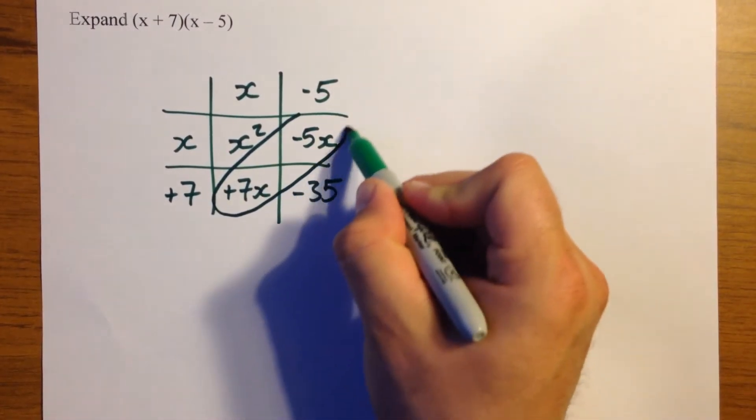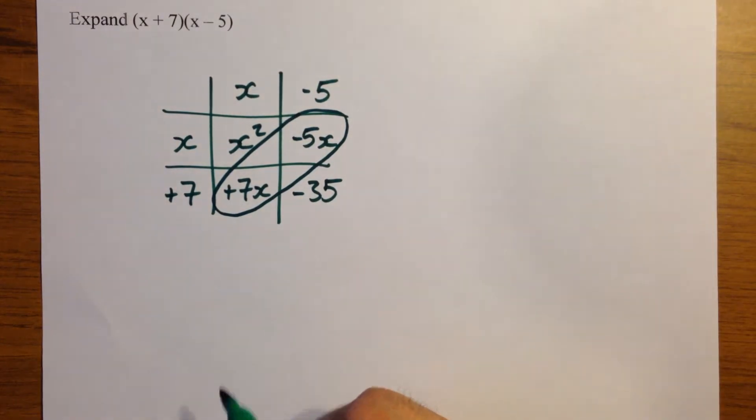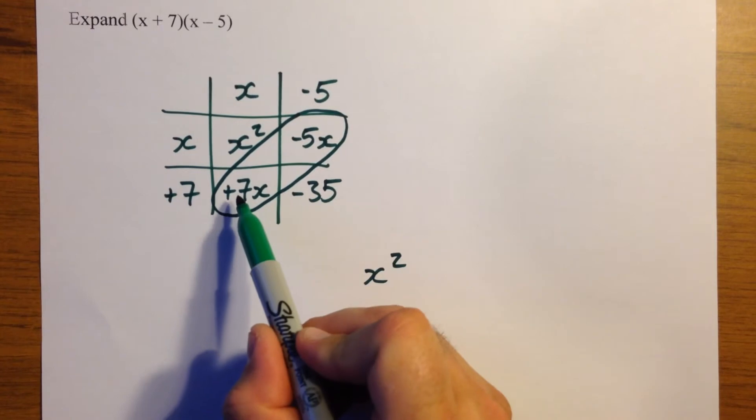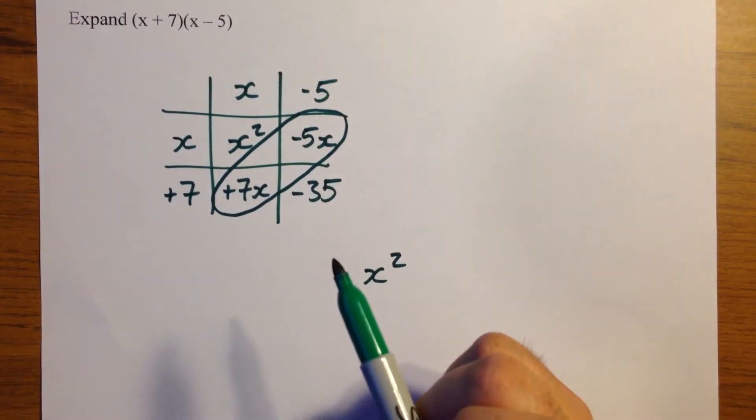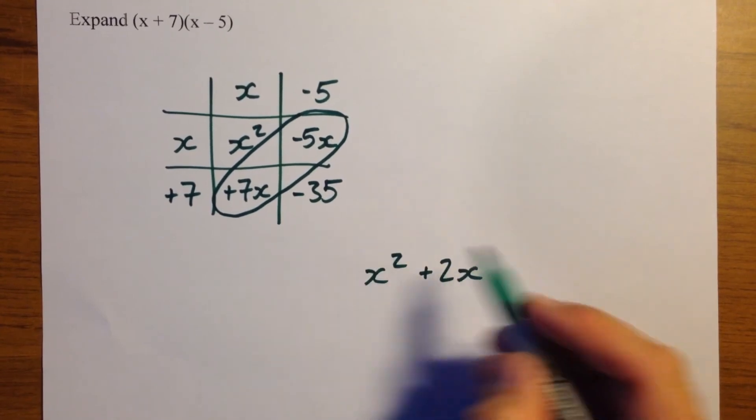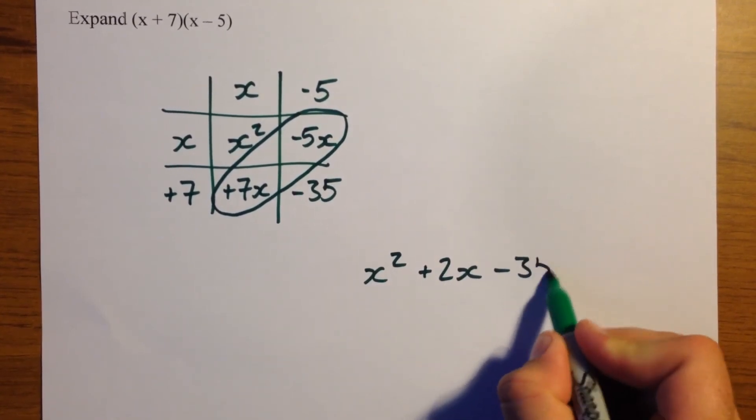Now same as before, we're going to circle those ones. That's the first part of our answer, x squared. Now we've got 7x take away 5x, which leaves us with 2x and then minus 35.